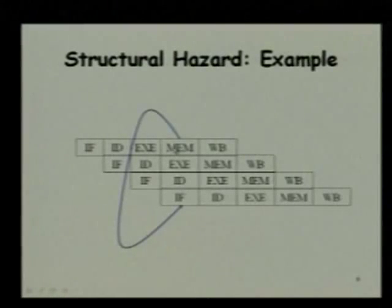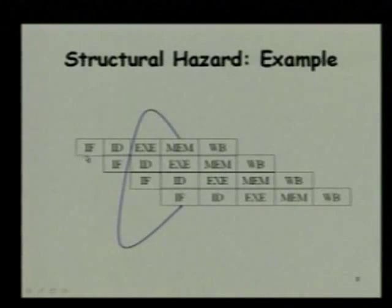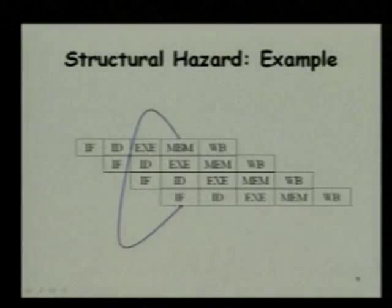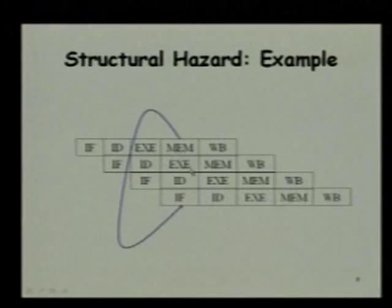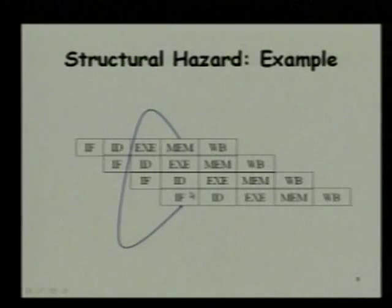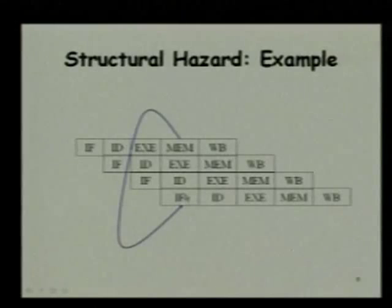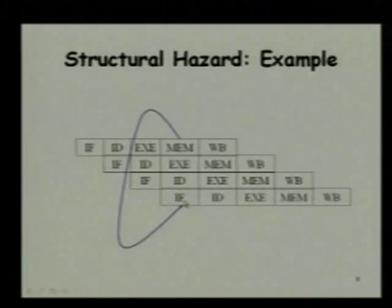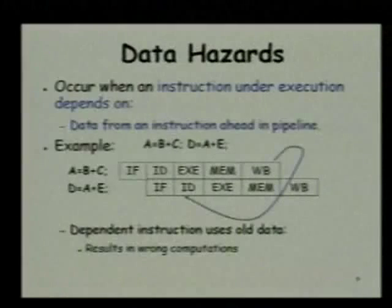Similarly, separate data cache and instruction cache is required because some instruction might be fetched and for another instruction the data has to be either written or loaded from the cache. One instruction is doing its data operation during the memory stage — load/store operation is being performed on the data cache — and here an instruction is being fetched from the instruction cache. So if it is just one unified cache which can supply only one unit per clock cycle, then we have to stall one of these. That is why all pipeline processors have two separate caches: instruction cache and data cache.